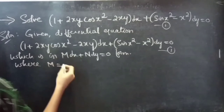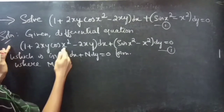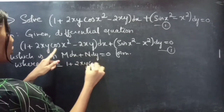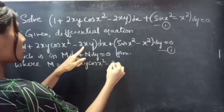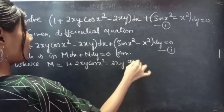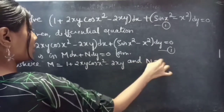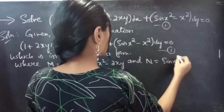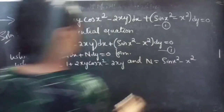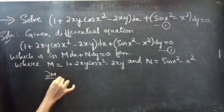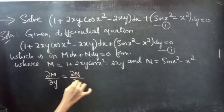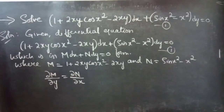By comparing, we get M = (1 + 2xy)cos(x²) - 2xy and N = sin(x²) - x². If the partial derivative of M with respect to y equals the partial derivative of N with respect to x, then we can say that the given differential equation is an exact equation.